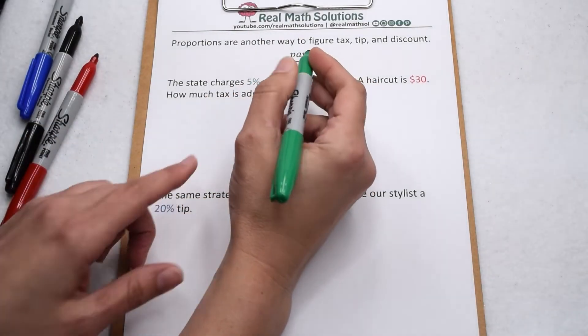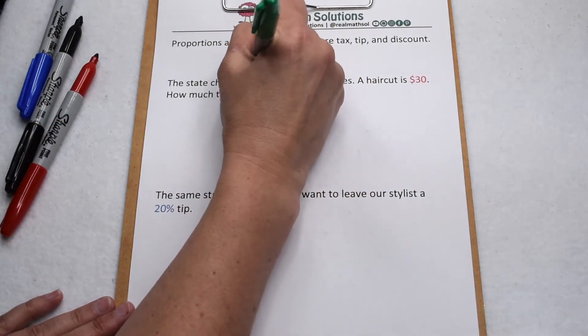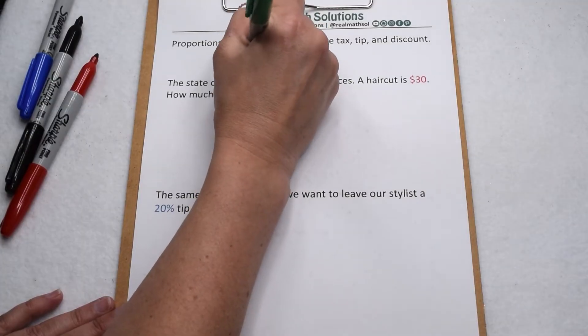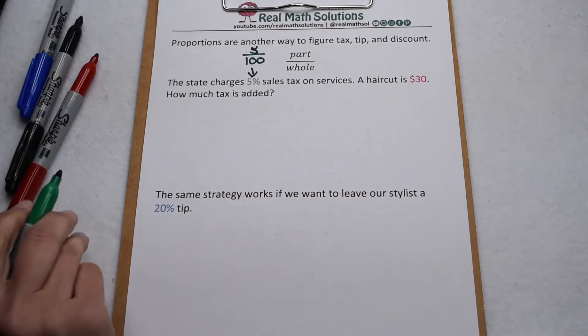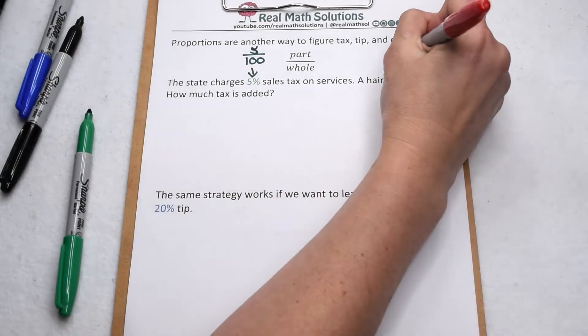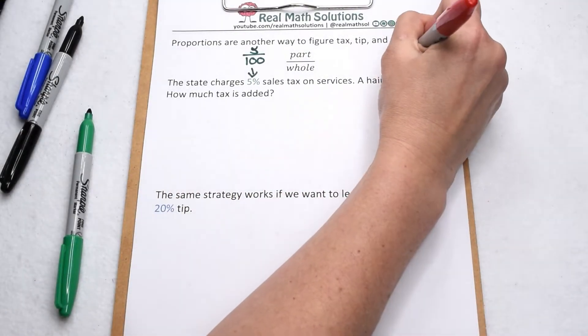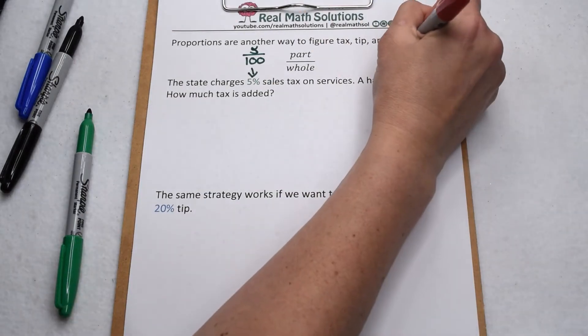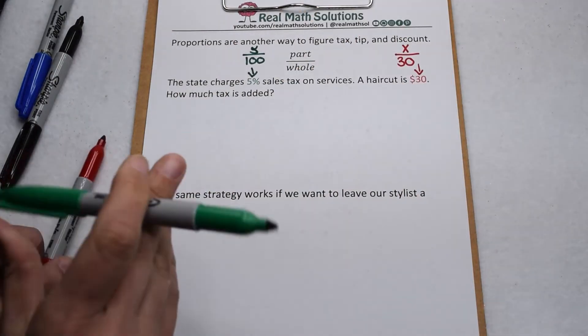Well, in this case, our proportion is going to compare part out of whole. So percents are already a proportion comparing a part out of 100, so 5% would be 5 out of 100. A haircut we're also going to look compares part out of whole. $30 would be the whole cost of the haircut and we're looking for what part we're going to have to spend on sales tax.